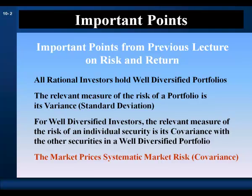To induce investors to hold risk, the market prices a risk premium into the price of a risky asset. But the market will not pay a risk premium for holding risk that need not be held. So the market pays no risk premium for holding diversifiable unsystematic risk. The market pays investors for risk they must hold — they cannot diversify away systematic market risk — so the market prices systematic market risk, which is measured by covariance.